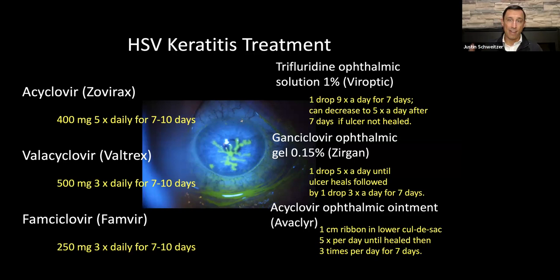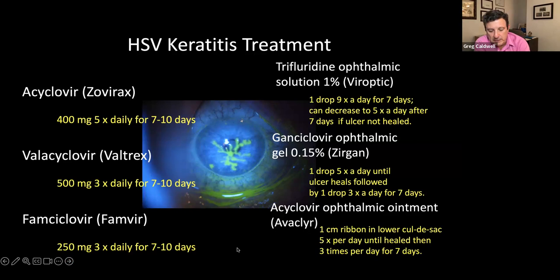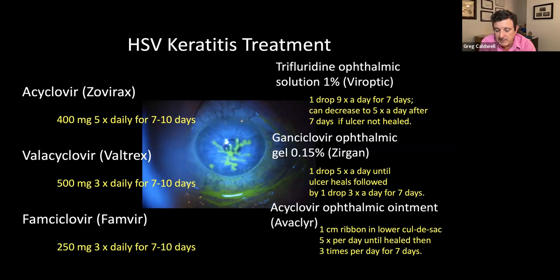One comment: we're all programmed to do nine times a day and pound it for 10 to 14 days. My advice is follow these people up. As soon as you start getting reversal, ratchet that down — especially if they're on topicals — because this medication is toxic and then you have to deal with toxic keratopathy. If you're going to use a topical, especially trifluridine, as you start getting reversal, drop to three or four times a day, get it healed, and get them off. You have them on the orals, so you don't have to keep topicals on as long.